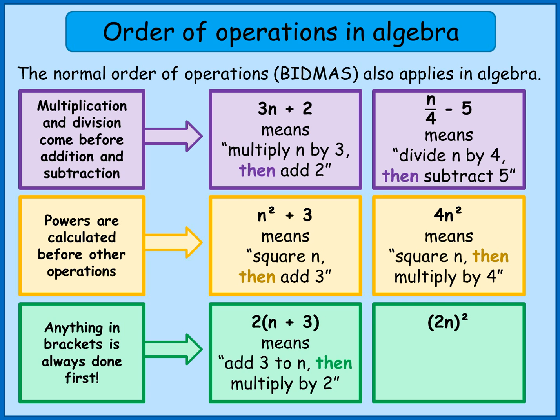And then this one, (2N) all squared. You might want to compare this to this one here directly above it, 4N squared. So with 4N squared, we were squaring N and then multiplying by 4. If I've got my 2N in brackets, I will do N multiplied by 2 first and then square my final answer.